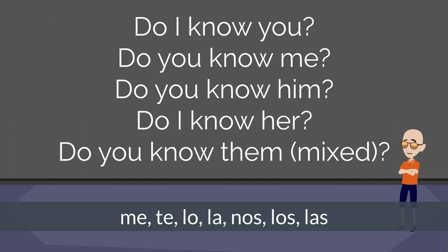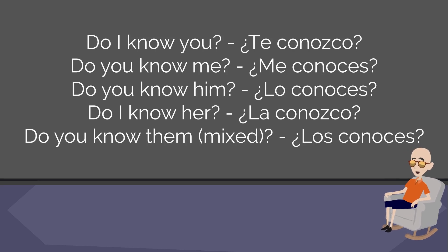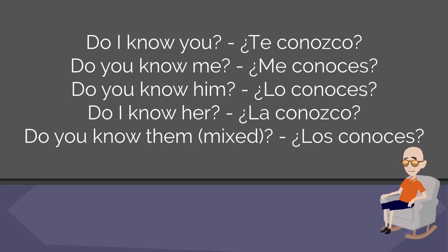Here's your chance to try translating a few of these on your own. I put five sentences in English on the board — they're all similar, just a slight difference. I also put the direct object pronouns on the bottom of the screen so you don't have to flip back through your notes. Go ahead and pause the video now. Here are the answers: 'Do I know you?' — '¿Te conozco?' 'Do you know me?' — '¿Me conoces?' 'Do you know him?' — '¿Lo conoces?' 'Do I know her?' — '¿La conozco?' 'Do you know them?' — mixed group, men and women — '¿Los conoces?'